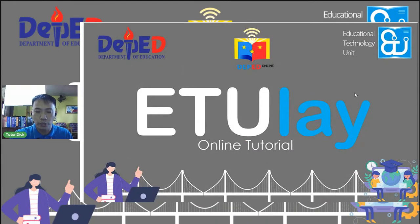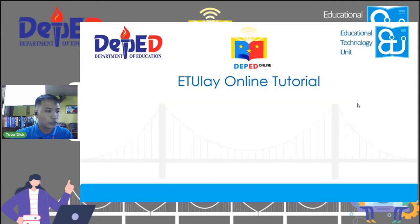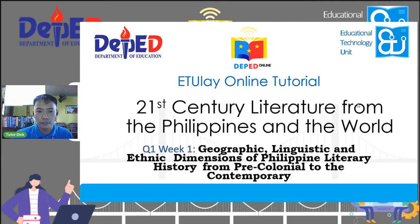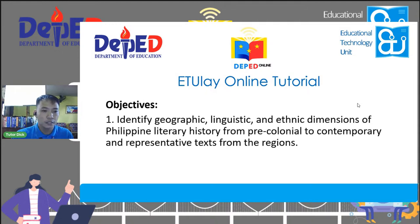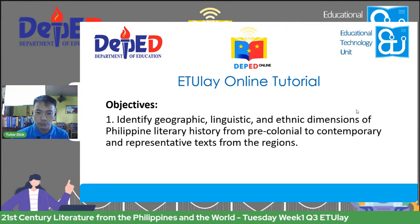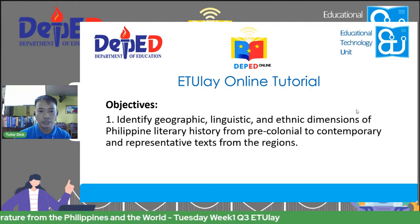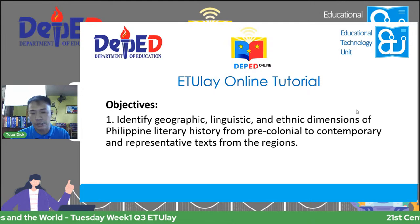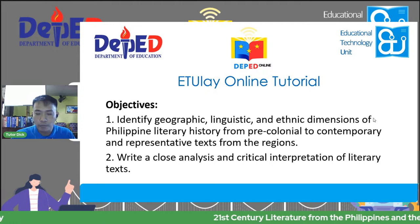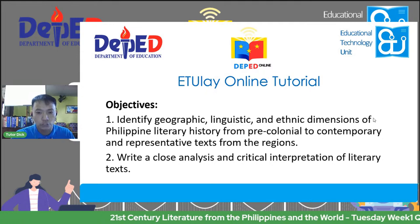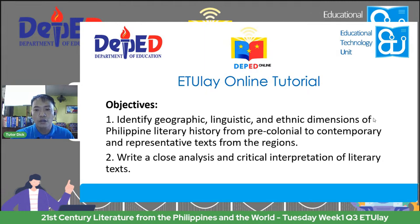From quarter one, week one of 21st century literature from the Philippines and from the world. We have two objectives for this tutorial class. Number one is identify geographic, linguistic, and ethnic dimensions of Philippine literary history from pre-colonial to contemporary and representative texts from the regions. The second objective is to write a close analysis and critical interpretation of literary texts.